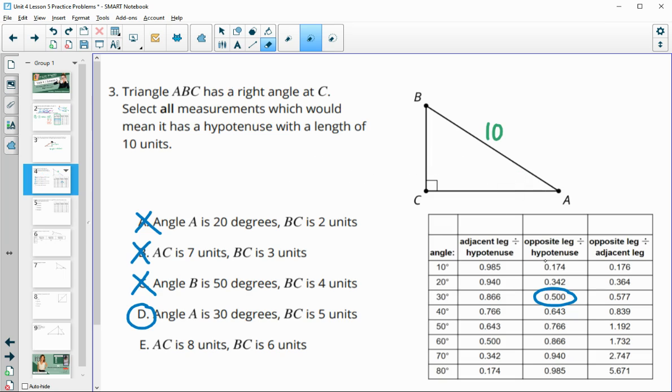And then part E, if AC is 8 units and BC is 6, would this work? So again, this is a Pythagorean theorem since we've got all three sides. Take a look at 6 squared, which is 36, plus 8 squared, which is 64. That gives us 100, which is what 10 squared is, so E works as well.